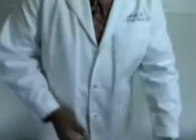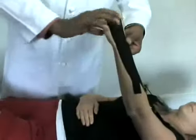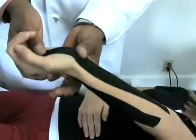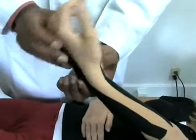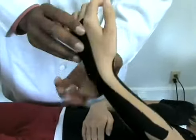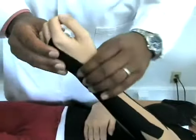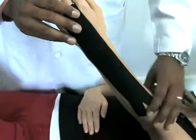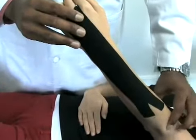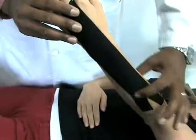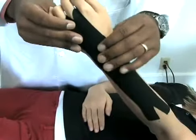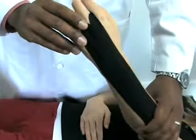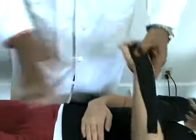So first, for carpal tunnel, you would Kinesio Tape in such a fashion for the carpal tunnel itself, which is located right about here. You also want to Kinesio Tape these muscles, because the muscles that start at the elbow and run down along here, run past the carpal tunnel into the hand. So you also want to address those.